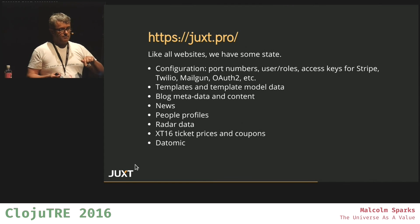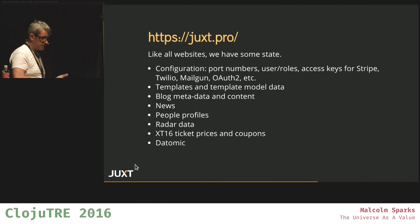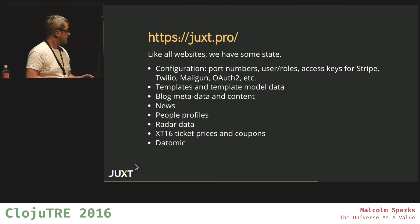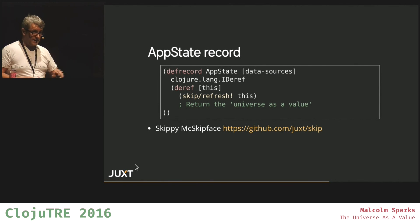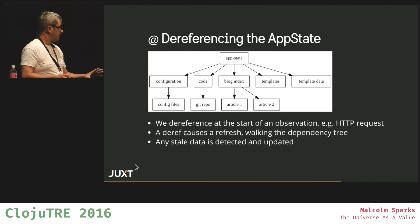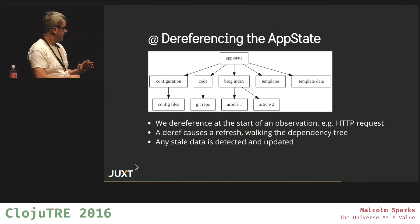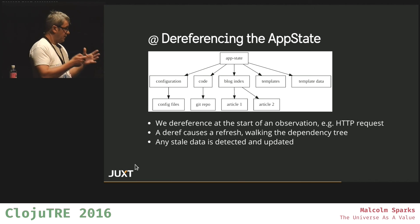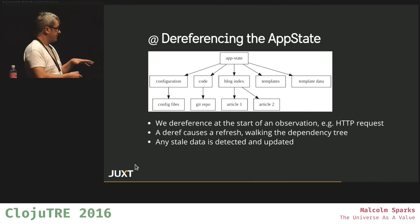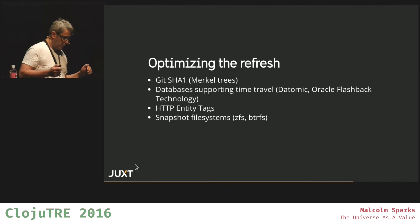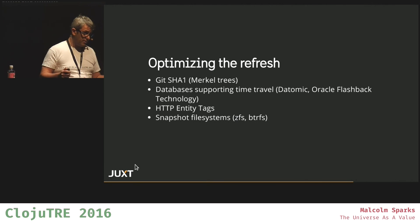I wanted to see what it would mean to take an app state model that we see in our browsers and move it to the server side. I've been experimenting with our own website, because it doesn't matter if I break it. It's a non-trivial system. We have quite a lot of state in our website, so we built a record called app state. And we can deref it. But when we deref it, we do a refresh on a big graph — this is my universe as a graph. The app state record walks the tree and asks everything, are you up to date? And if you're not up to date, the thing asks, can you update yourself? Usually, if nothing has changed, this is a very quick operation. What tools and techniques are available to make this refresh very quick?